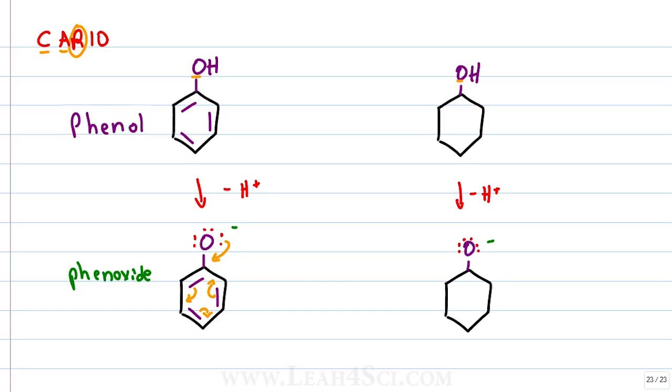Having resonance to stabilize the negative charge makes this structure much more stable, and if it's more stable with a negative charge, it's more likely to form, making the starting acid stronger or more acidic. This oxygen, on the other hand, is comparatively unstable, very unhappy, and much more likely to reform the starting acid. This makes cyclohexanol a weaker acid but gives us a stronger conjugate base.